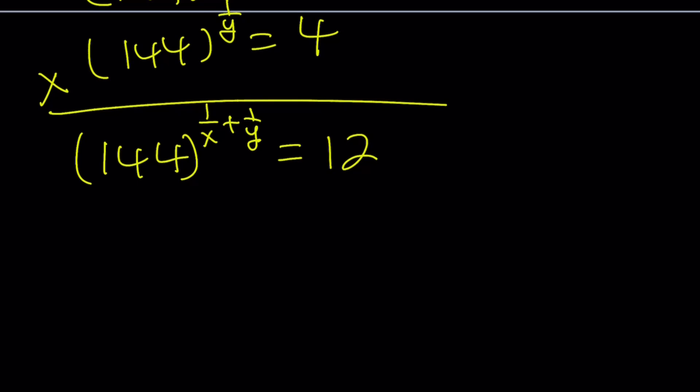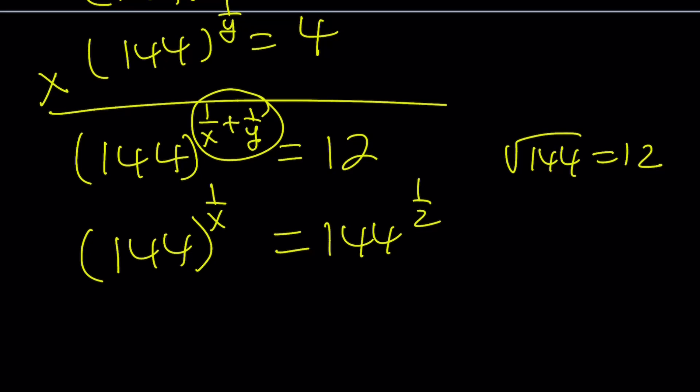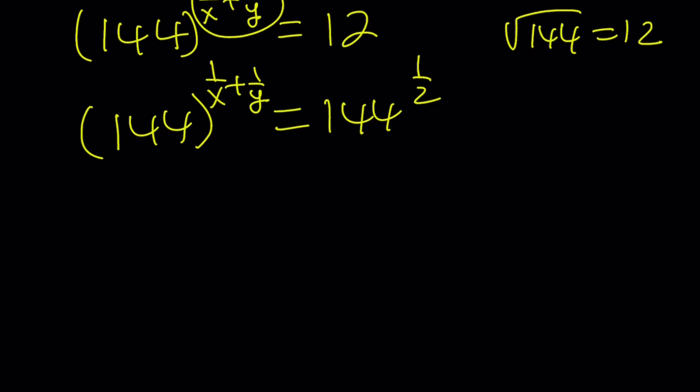So the question is 144 to the power what equals 12? And the answer is 1 half. Why? Because the square root of 144 is 12. Therefore, we can just write the 12 as 144 to the power 1 half. This is 144 to the power 1 over x plus 1 over y. And then from here, we can safely say that 1 over x plus 1 over y equals 1 half.